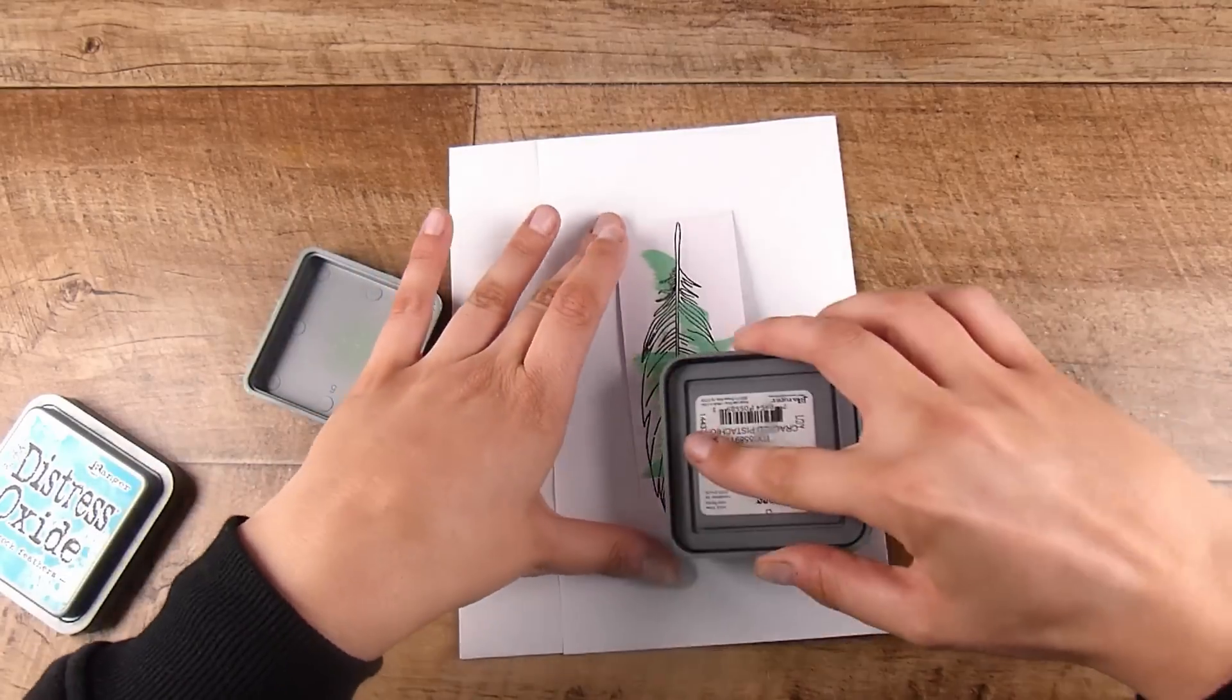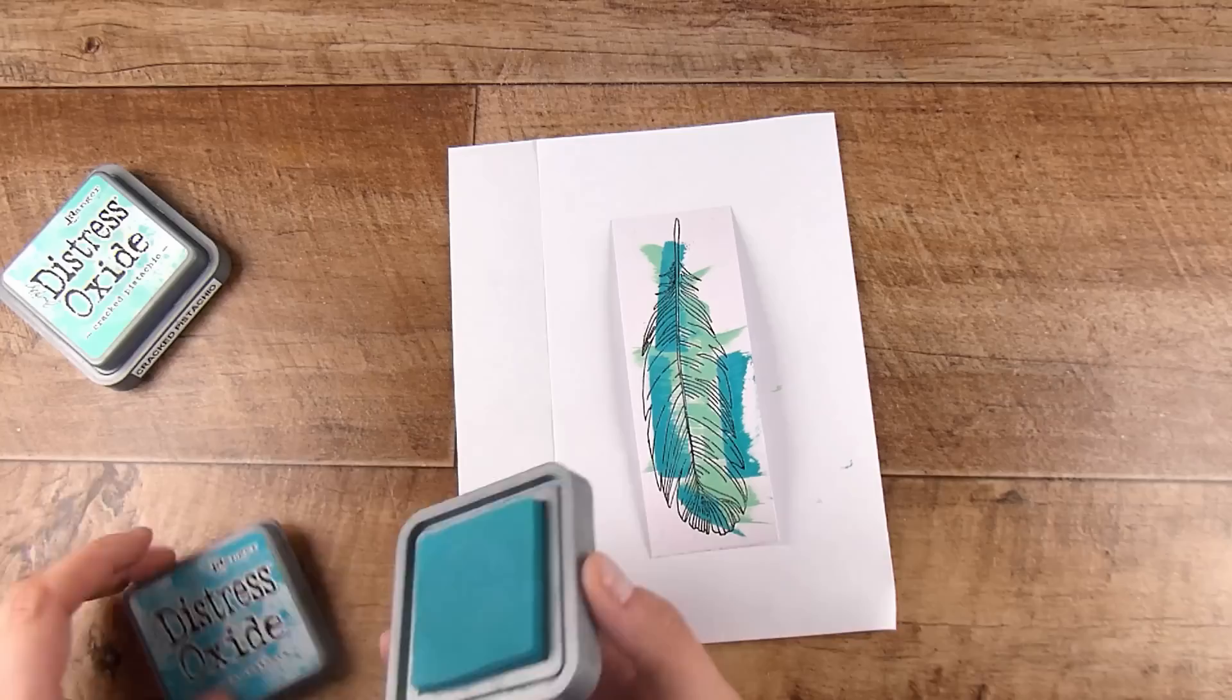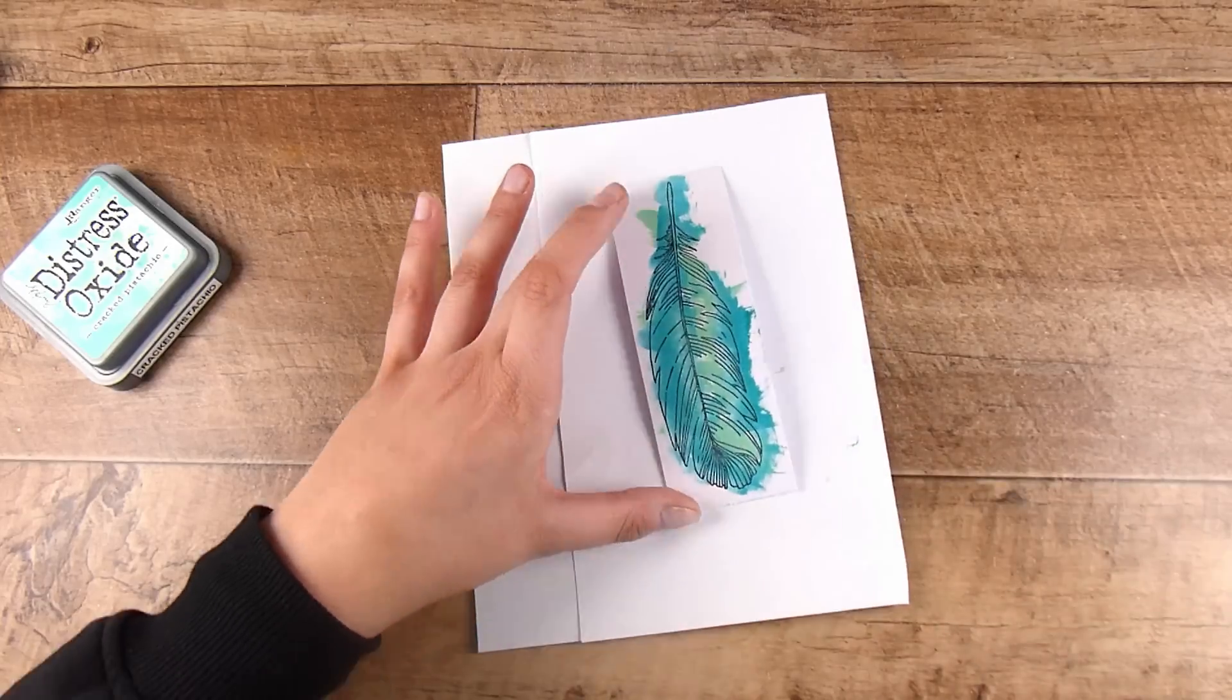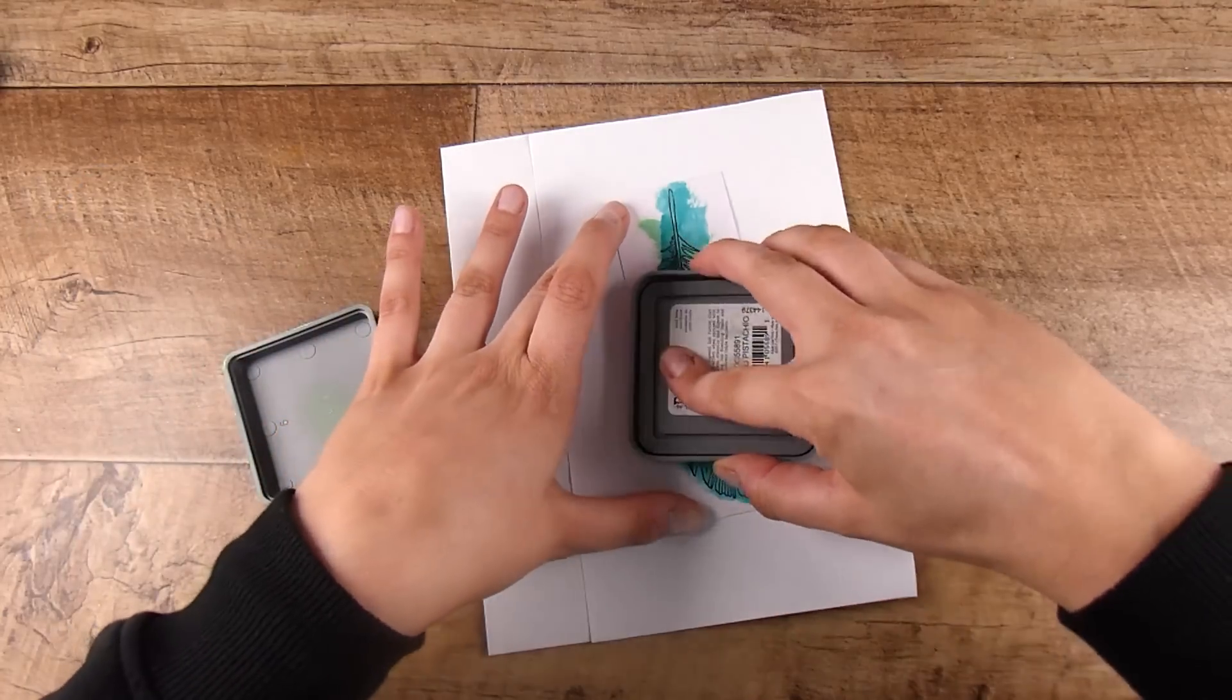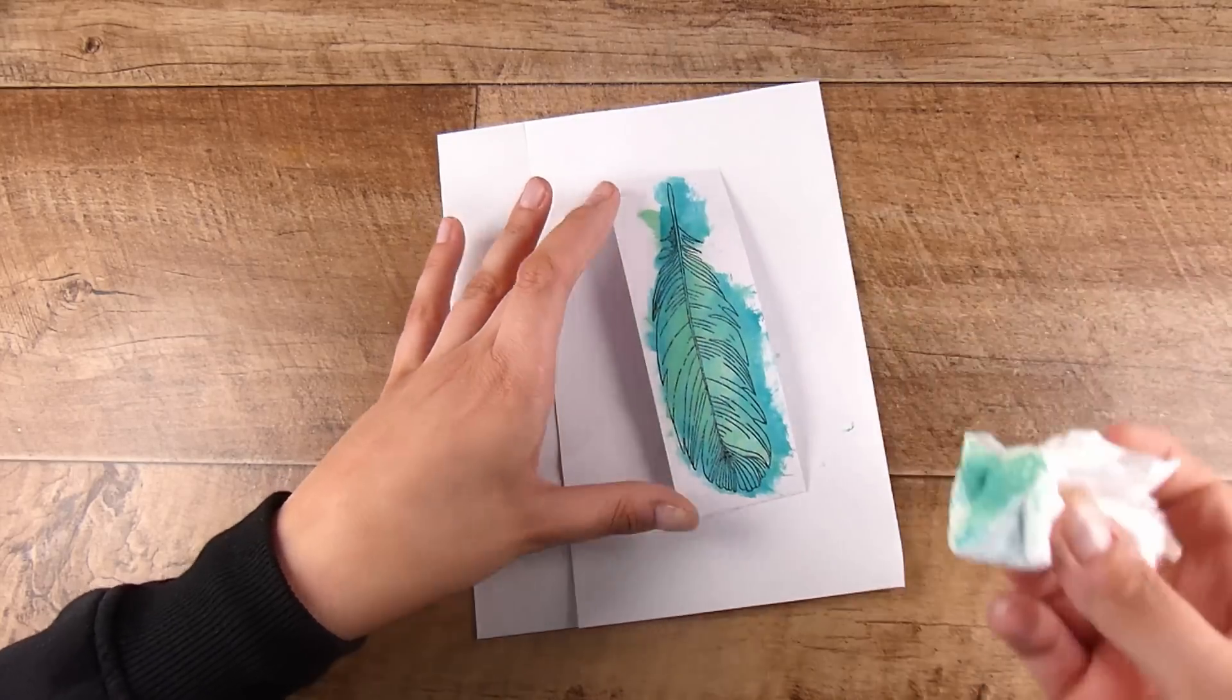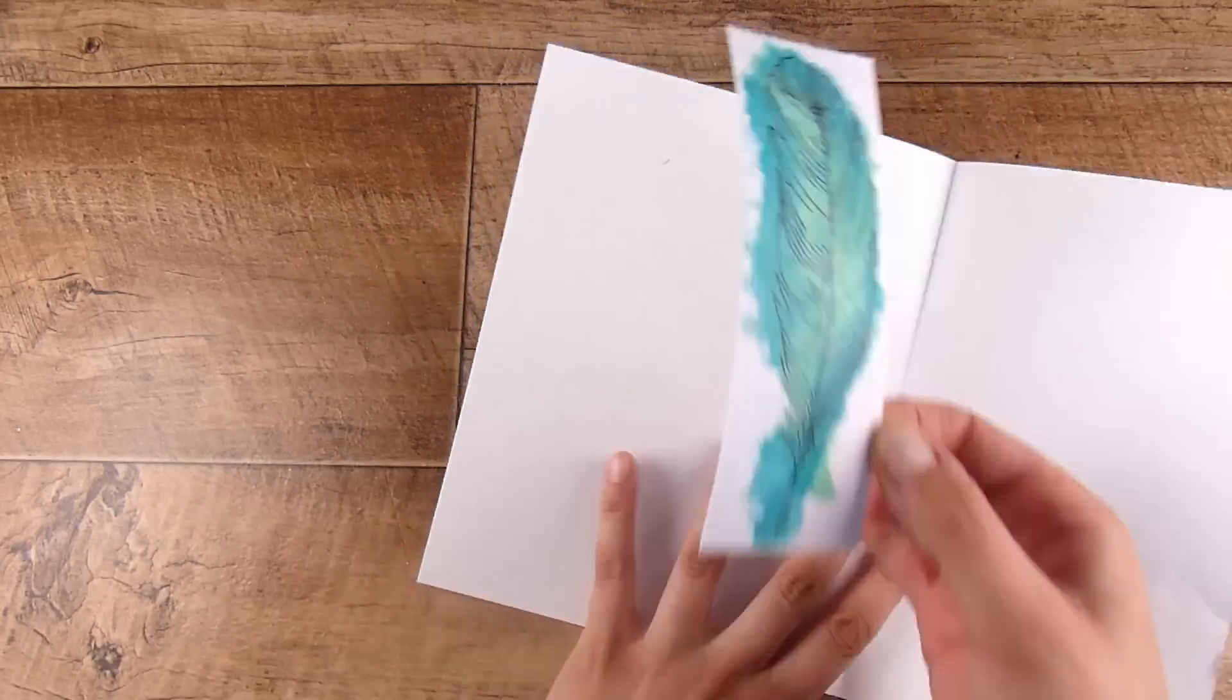I want to create a really domed glass feather, so I need some background color. I'm going to use some cracked pistachio and maybe salty ocean or something blue along those lines, and I am going to just dab some of the color on. This looks like a hot mess, but we're going to make a big glass dome over this. I'm just using a damp little baby wipe, a wet cloth, to blend these colors in together just a little bit. Pull back that blue, there was quite a lot of blue, so I can add a little bit more cracked pistachio over top.